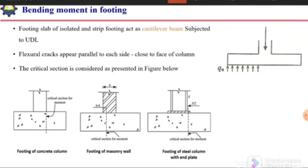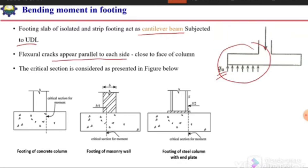To design against bending moment, we need to address both the thickness and reinforcement of the footing. The footing slab of an isolated or strip footing acts as a cantilever beam subjected to uniformly distributed load. Flexural cracks appear parallel to each side of the column, close to the face of the column, so the critical section will be close to the face of the column. In the case of a concrete column with a concrete footing, the critical section lies at the face of the column.